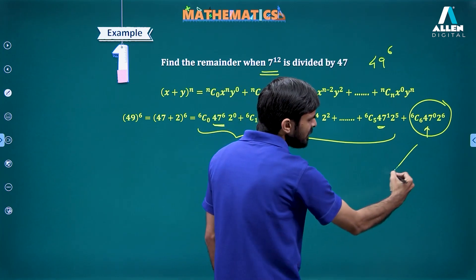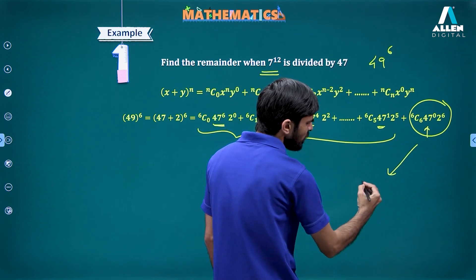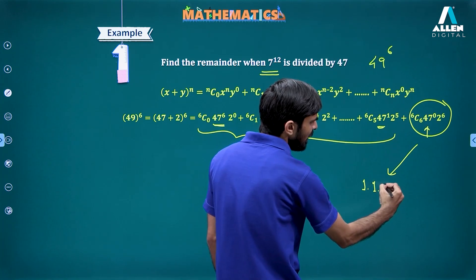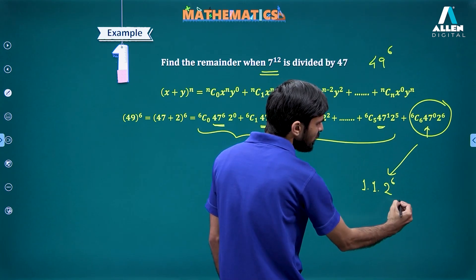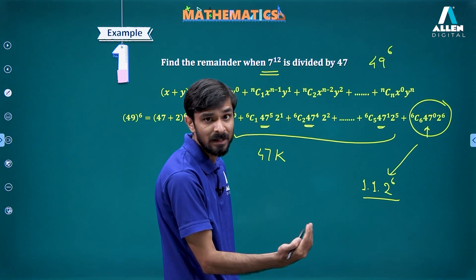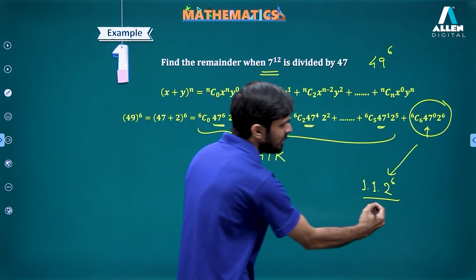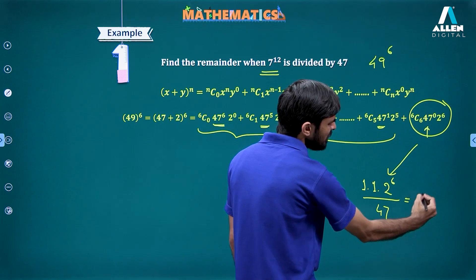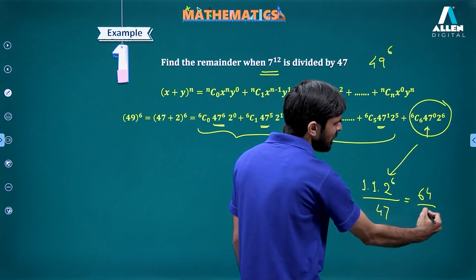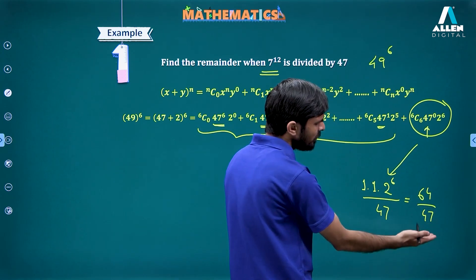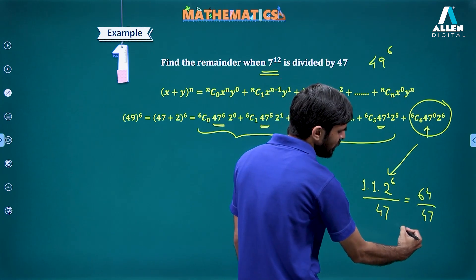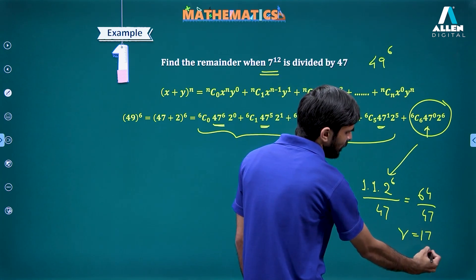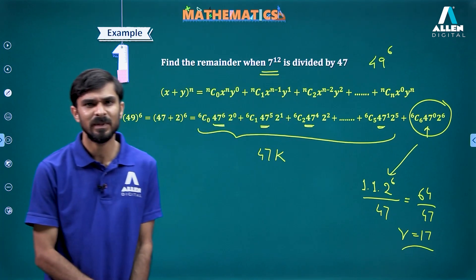The last term of the binomial expansion is C(6,6) times 47^0 times 2^6, which simplifies to just 2^6. So we need the remainder when 2^6, which is 64, is divided by 47. 64 minus 47 gives remainder equal to 17.